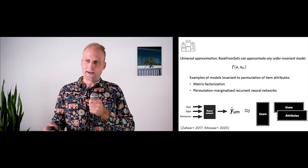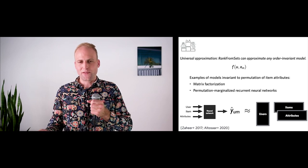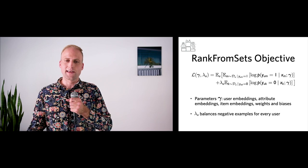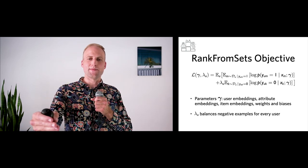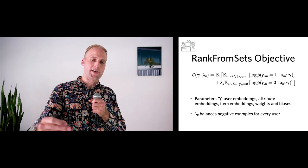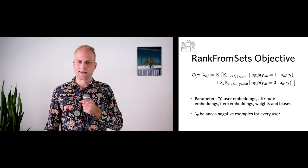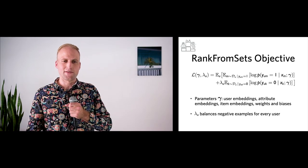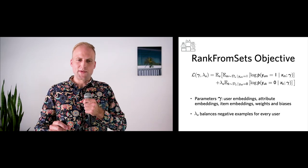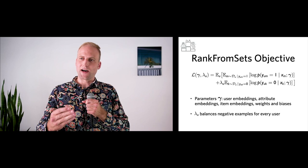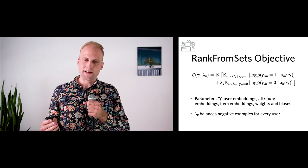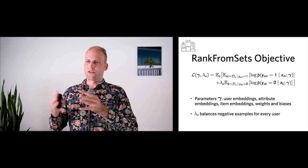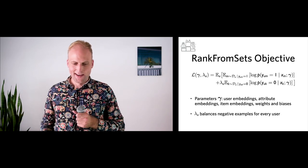Now that we've built our binary classification model Rank from Sets, how do we train it? It's binary classification — the goal is to separate the yum from the yuck. Positive examples (yum) are trained to be separated from negative examples (yuck) — items the user did not consume in training data. The binary classifier has parameters gamma including user embeddings, food embeddings, or neural network weights. One subtlety is parameter lambda_u to balance positive and negative examples, since in implicit feedback data where users only report what they ate, the number of negative examples is enormous.